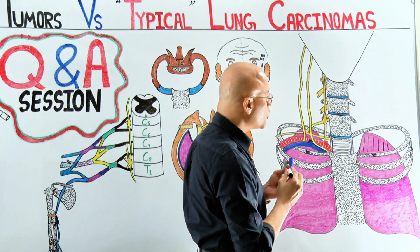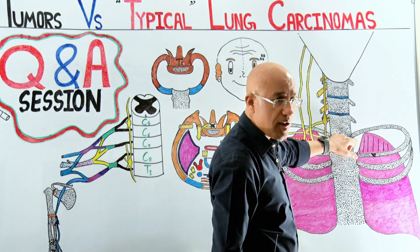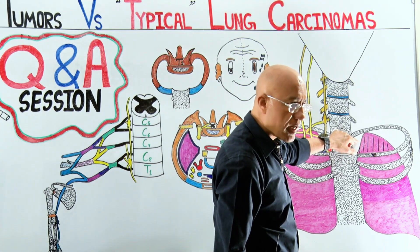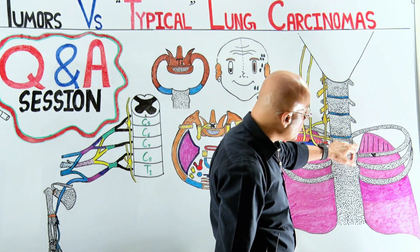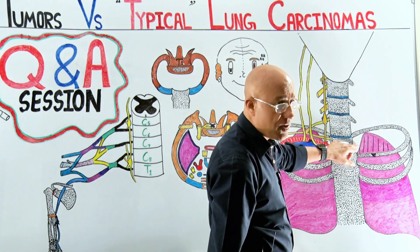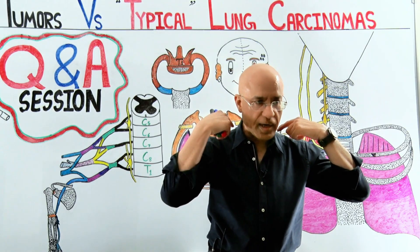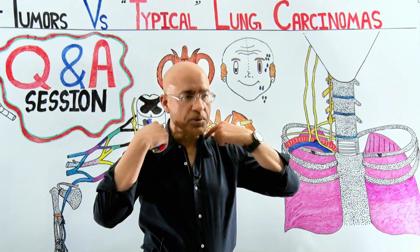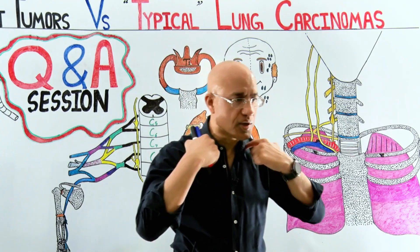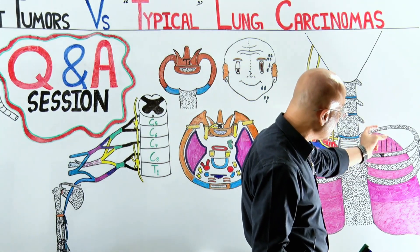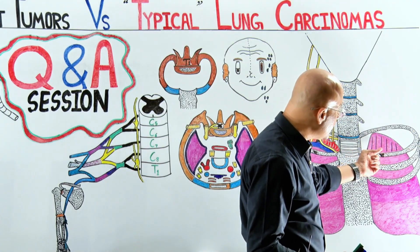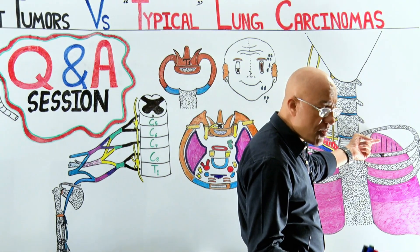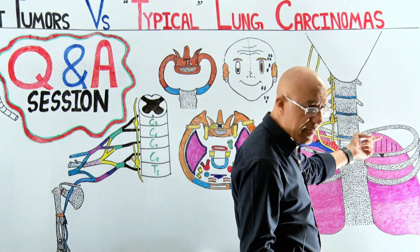Primary tumors which originate from this place are called apical tumors, or more conventionally and traditionally we call them Pancoast tumors or Pancoast carcinomas. They are basically located in the thoracic inlet — above the thoracic inlet. The thoracic inlet is basically a communication between the head and neck structures and the thorax.